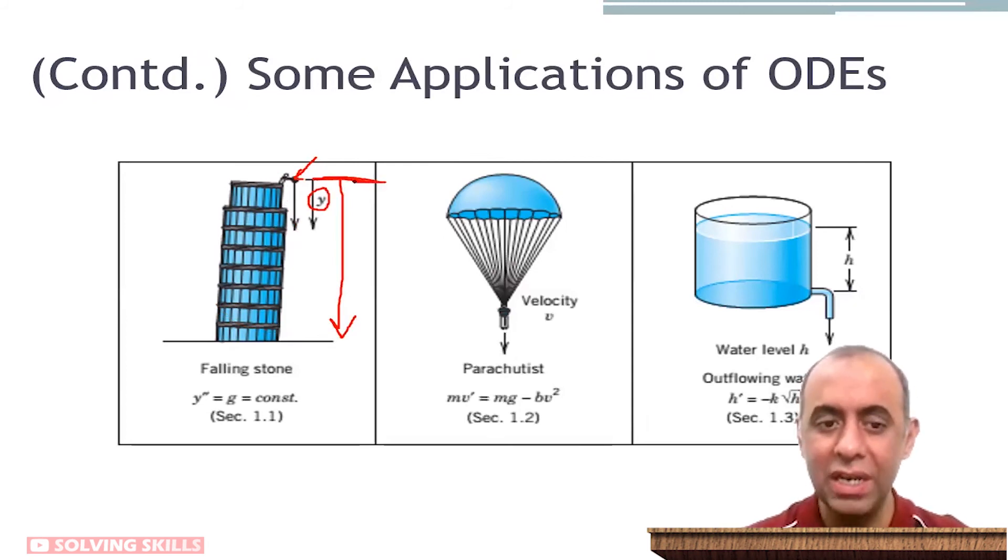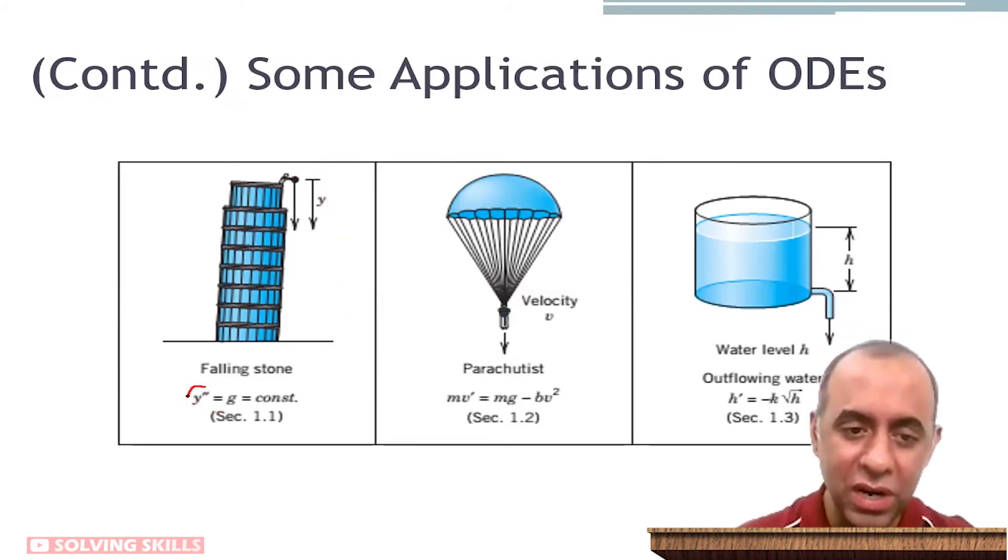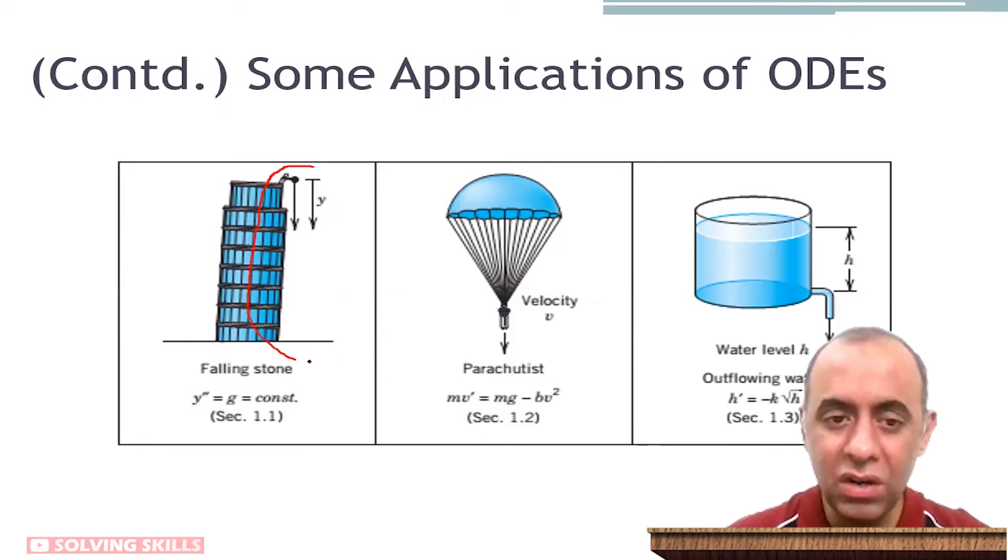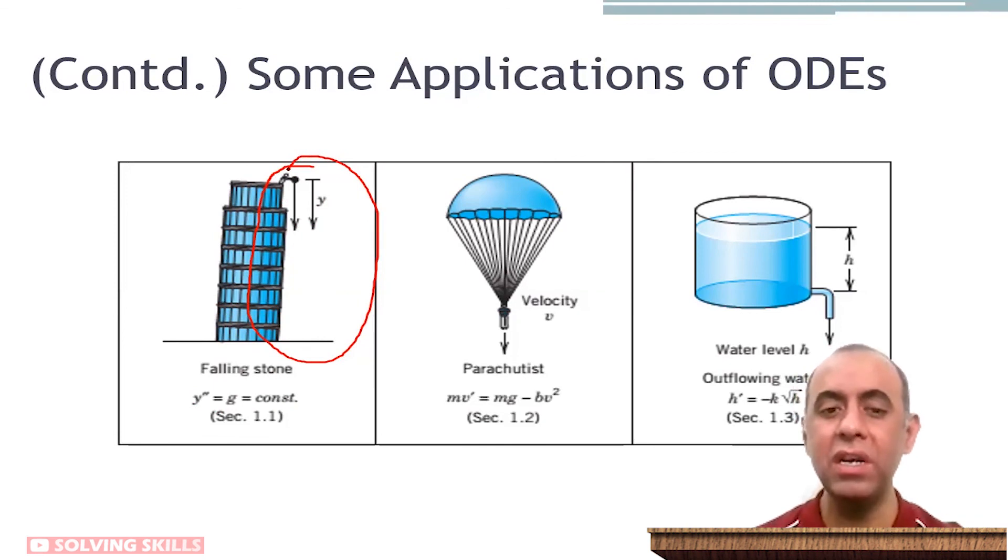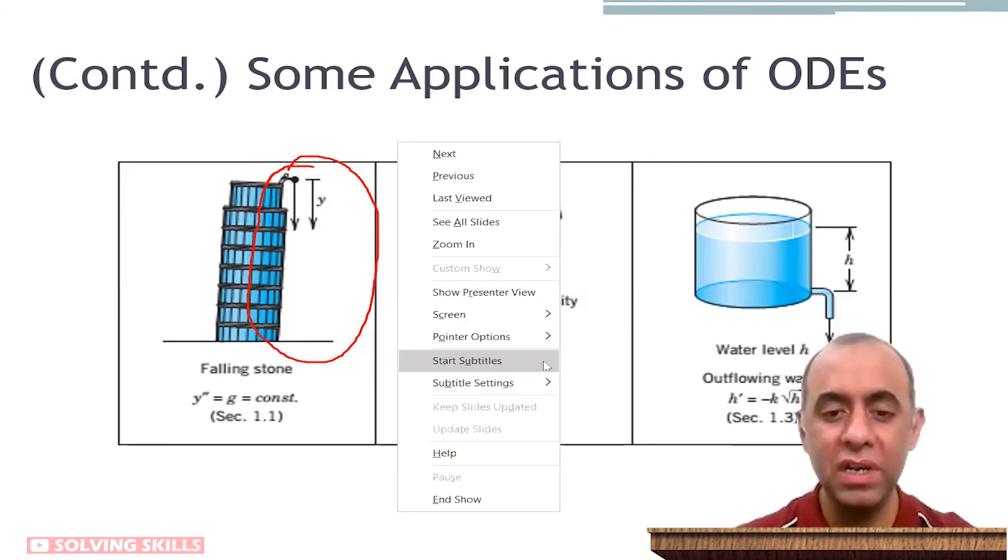Y double prime is the thing which makes this equation a differential equation. And where did this differential equation come from? It came from the modeling of a physical process: a stone falling from the top of a building and reaching down to the bottom of that building.